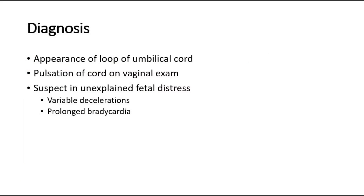To diagnose cord prolapse, we expect to see the loop of the umbilical cord appearing, and on vaginal examination, we can feel the pulsation of the cord. We should suspect cord prolapse in unexplained fetal distress, such as variable decelerations or prolonged bradycardia seen on the CTG.